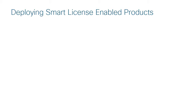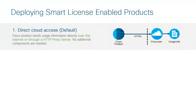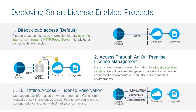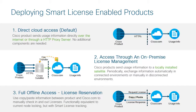Let's understand the most common deployment options with Smart Enabled products. First, there is Direct Cloud Access, where you manage all of your license usage using Smart Software Manager at Cisco.com. And second, there is On-Premise License Management, or Cisco Smart Software Manager Satellite, which replicates the user experience from the Direct Connect method but provides high security. You may choose options based on your security posture. In this video, we will cover the Cisco SSM Satellite in additional detail.